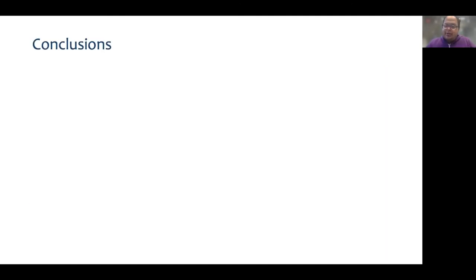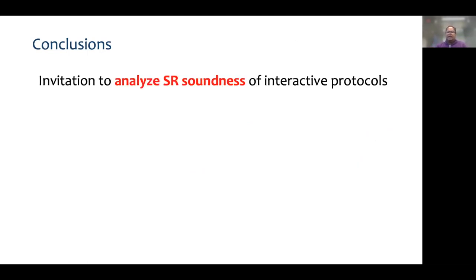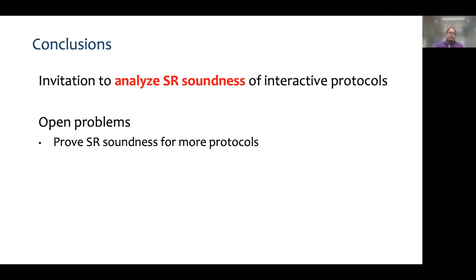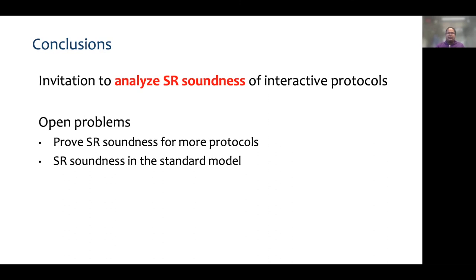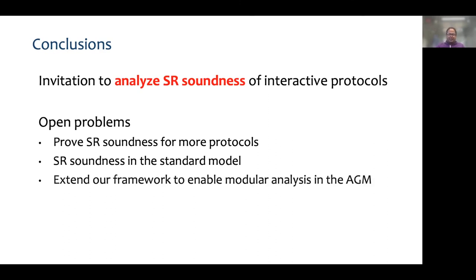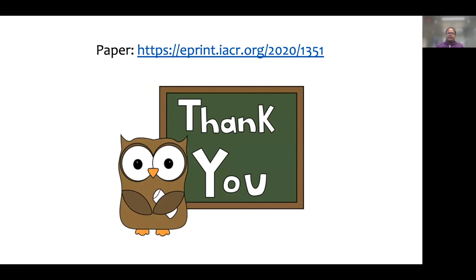Even if I overwhelmed you in this talk and you want to walk away with one line, it would be that it is essential to analyze the state restoration soundness of interactive protocols when using the Fiat-Shamir transform. Finally, let me conclude by stating some related open problems. An interesting direction of future work is proving state restoration soundness for more protocols, specifically those which are not based on groups. Proving a non-trivial bound for state restoration soundness of any argument in the standard model is a very important open problem. Another interesting open problem is extending our framework to allow modular analysis in the AGM. The full version of our paper is on ePrint. Thank you.